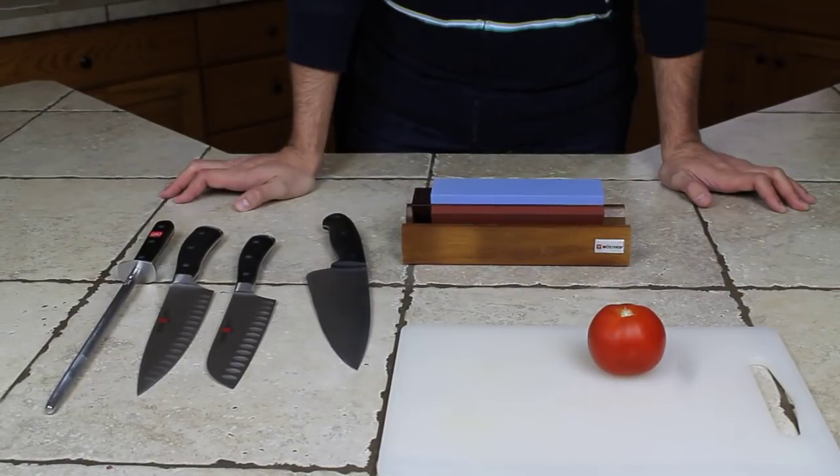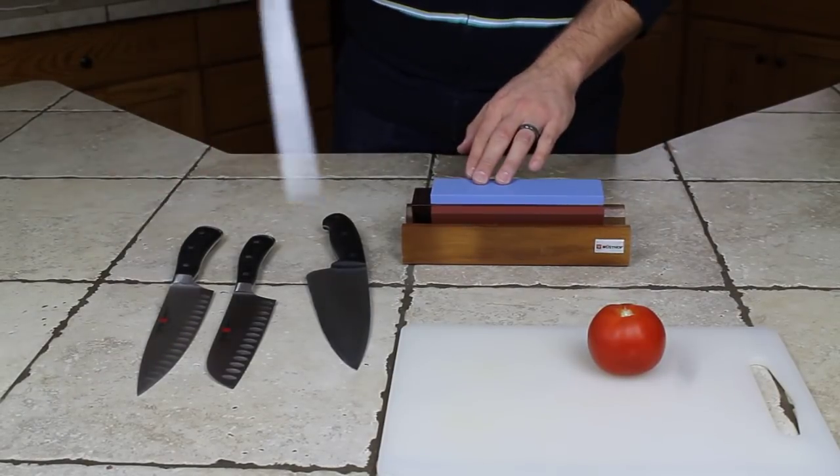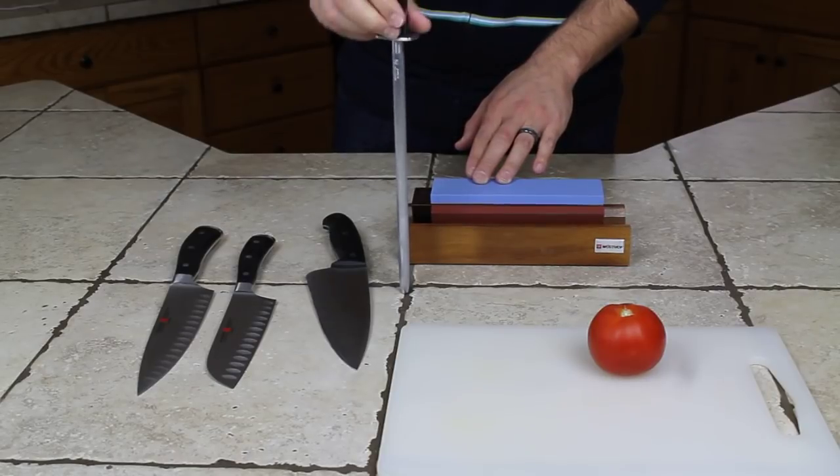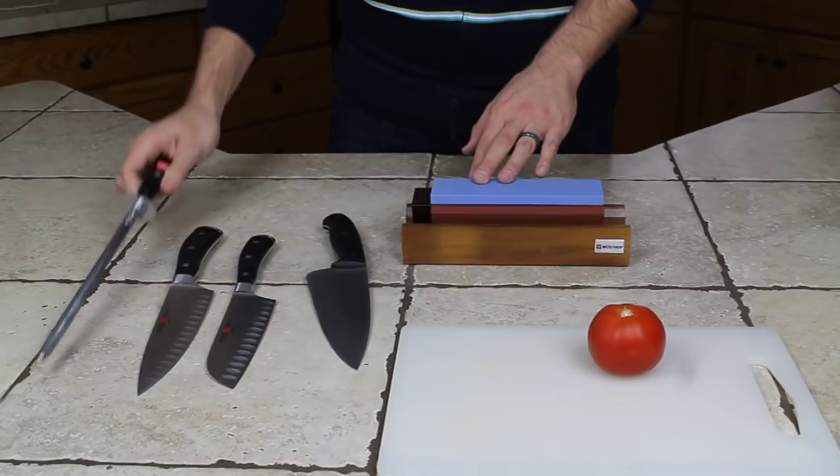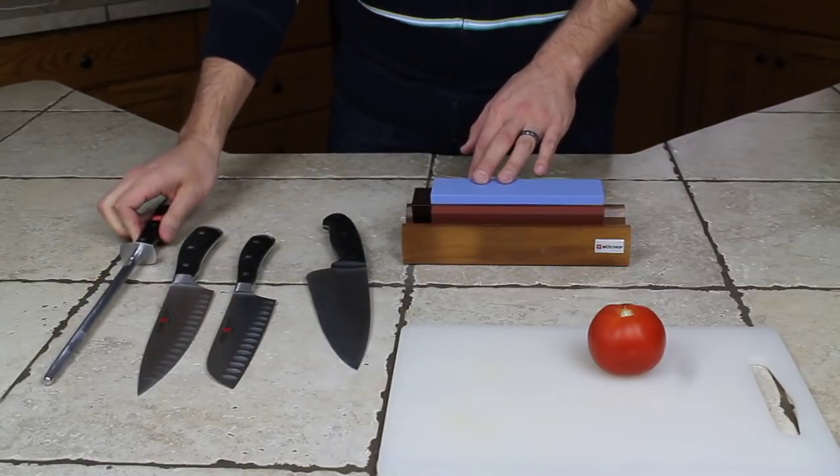Okay, quick video about sharpening a knife. First of all, the difference between this and this. This is a honing steel. It does not actually sharpen knives, it straightens the edge, but if a knife is really dull, no amount of using this is actually going to sharpen it.